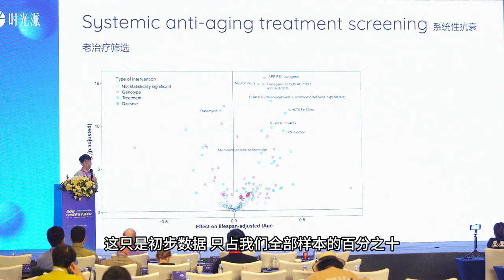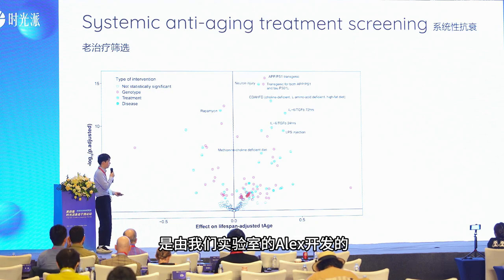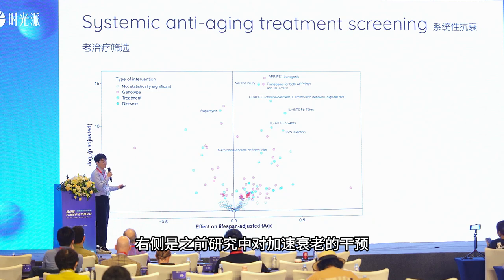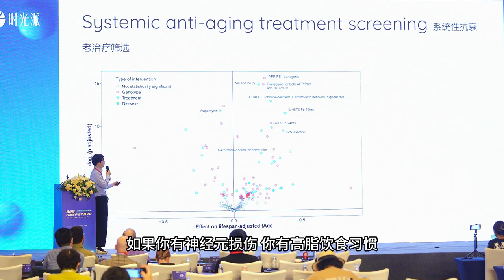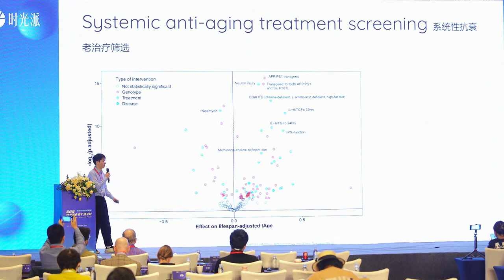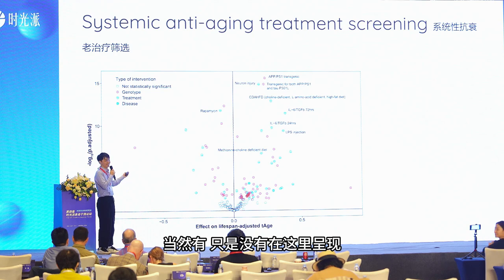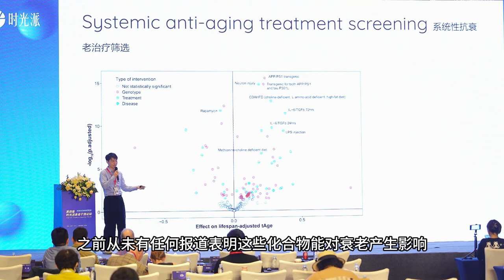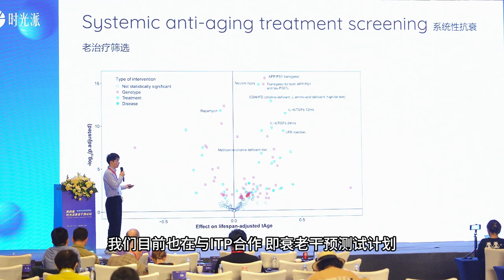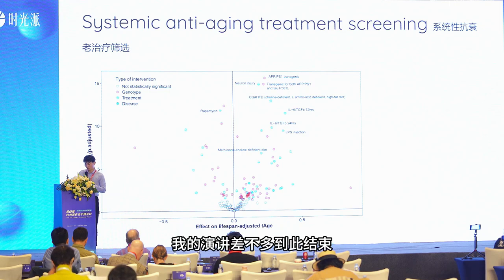Now we have all the cards in hand, so we did the screen. This is very preliminary — it's only 14% of all the samples we have. The x-axis is the transcriptomic age developed by Alec Tarkhovsky from our group. On the right side are interventions from previous studies that cause accelerated aging: the APPPS1 transgenic model, neural injury, amyloidosis, high-fat diet. On the left side are anti-aging therapies — we have rapamycin there. We also found a few novel compounds that people have never previously reported to have effects on aging, showing very nice results across various clock models. We are currently working together with the ITP — the Intervention Testing Program — to test these in mice.